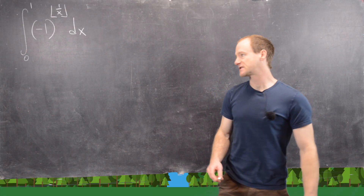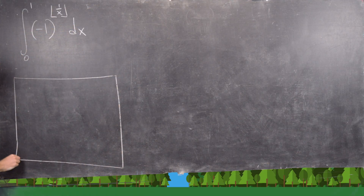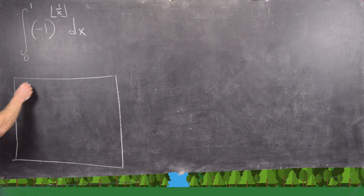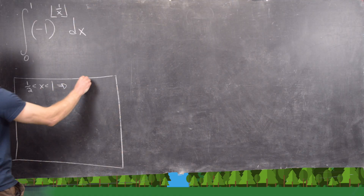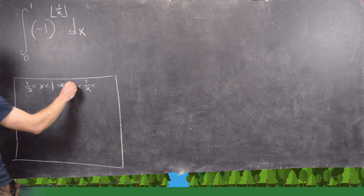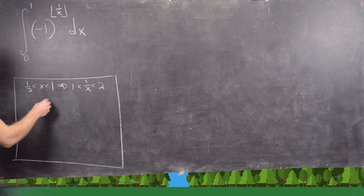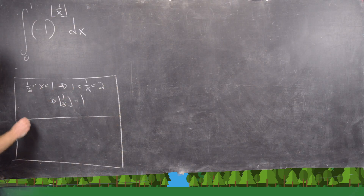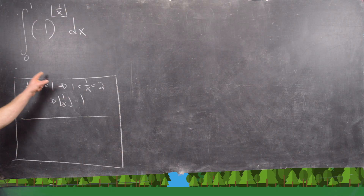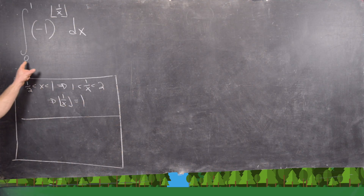Before we get started, let's explore a little bit. Notice that if x is between 1/2 and 1, that tells us that 1 over x is between 1 and 2 — we have to flip the inequality when we reciprocate. That tells us that the floor of 1 over x equals 1. So on the interval 1/2 to 1, the floor is a constant of 1. We could maybe split this up into different intervals.